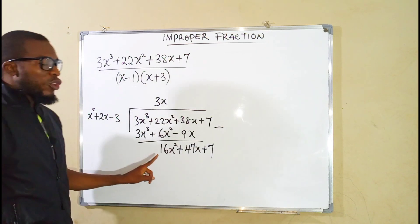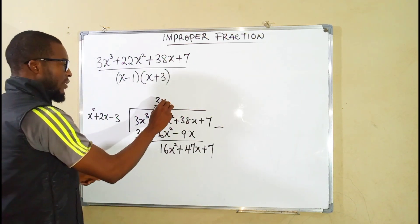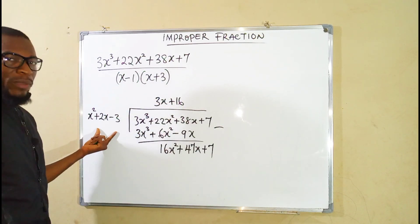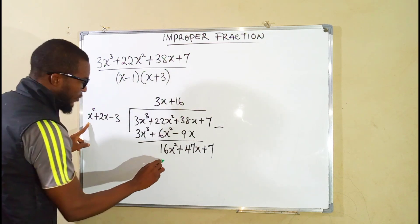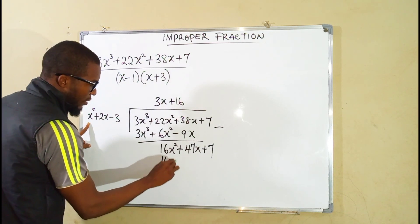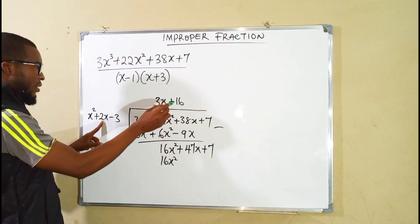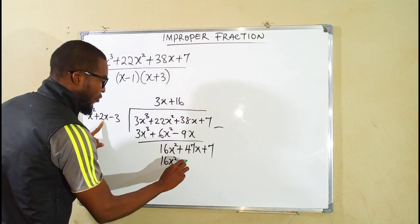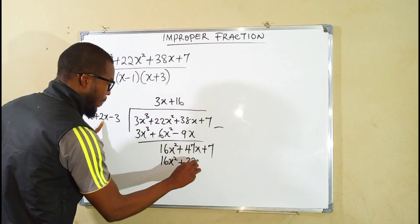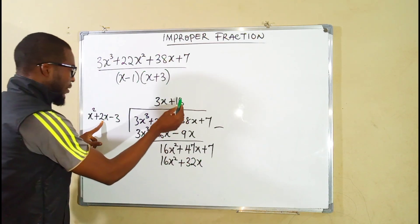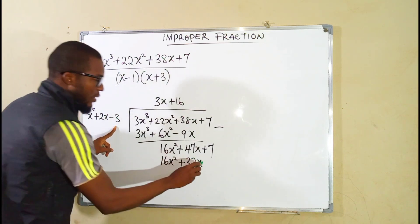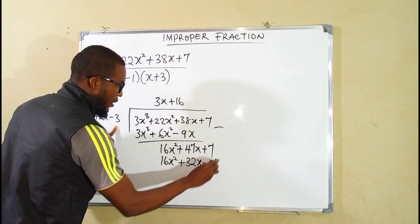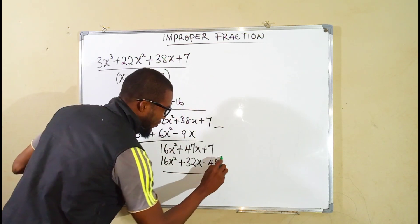x squared can go into 16x squared 16 times. So we say 16 multiply by these 3 terms. 16 times x squared is 16x squared, then 16 times 2x is going to be positive 32x. 16 times negative 3 is negative 48. We equally subtract.